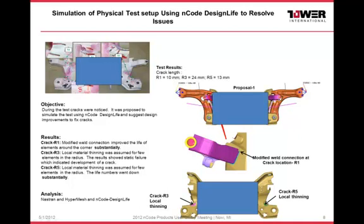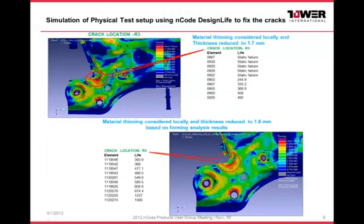This is one example where we had excellent correlation using Design Life to simulate the test cracks developed during the product development cycle. After simulating and correlating the crack location, we tried to give design improvements to fix the cracks. These are a few iterations where we simulated material thinning to better correlate the Design Life results with the test results.